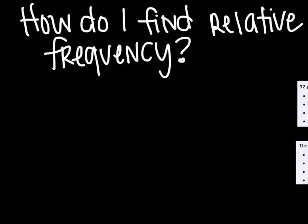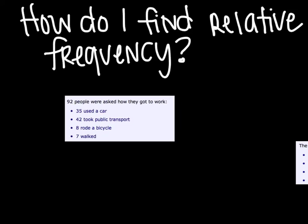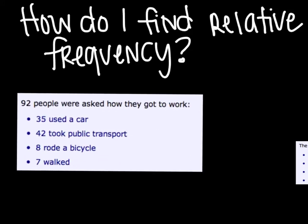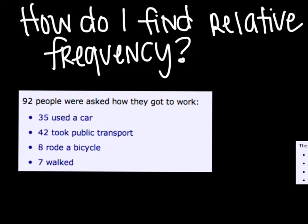And the other important piece is that all relative frequencies will add up to one when you're talking about decimals. How do I find relative frequency? Here's my example for you. Basically think about it as finding experimental probability. So 92 people were asked how they got to work. So then my experimental or relative frequency would be 35 out of 92, and then 42 out of 92, 8 out of 92 people, and 7 out of 92 people.